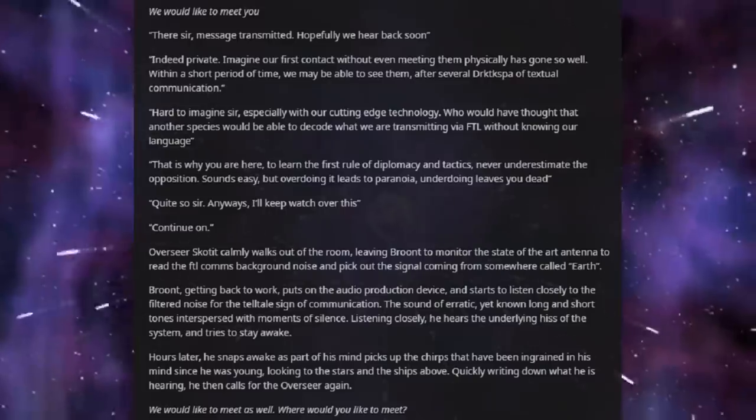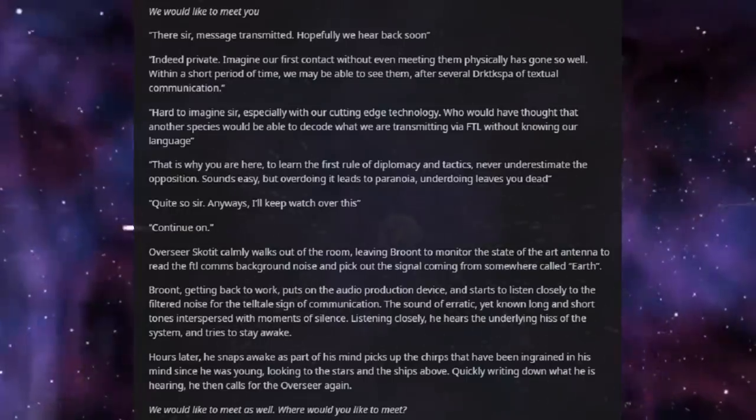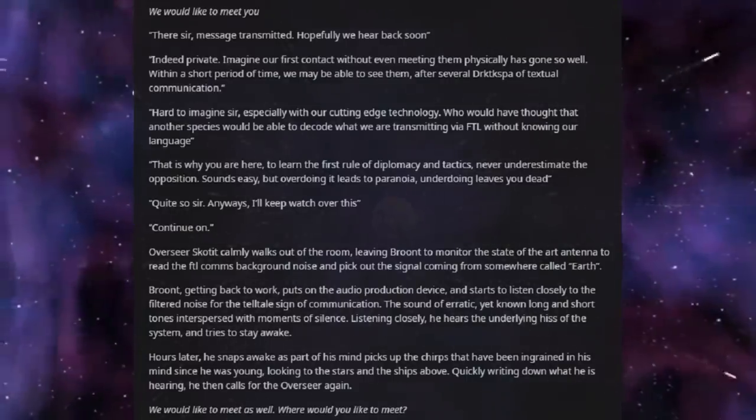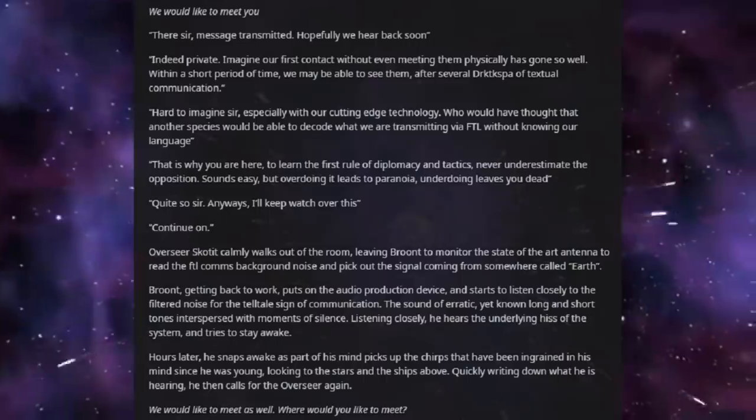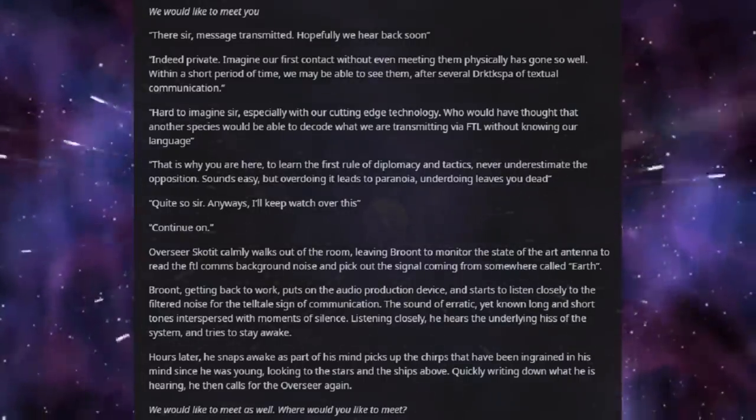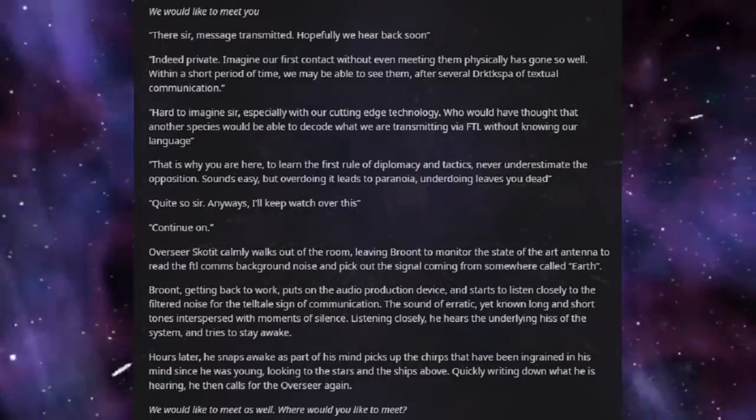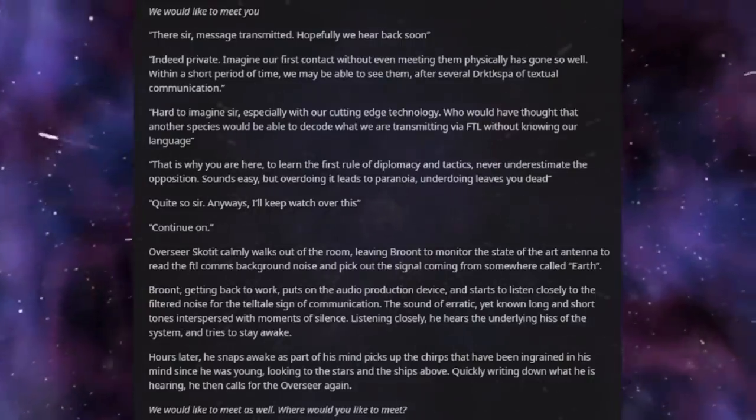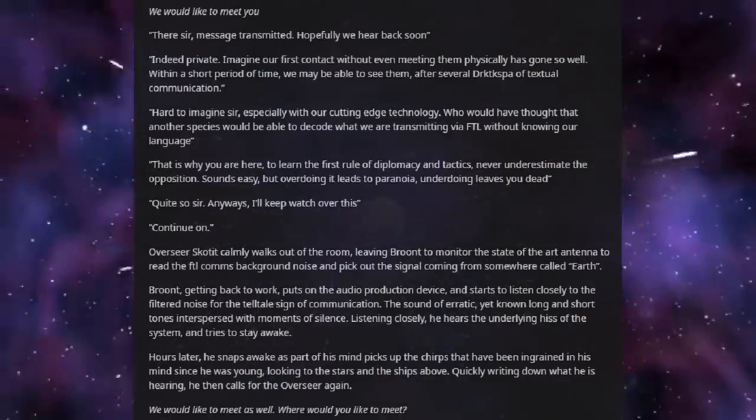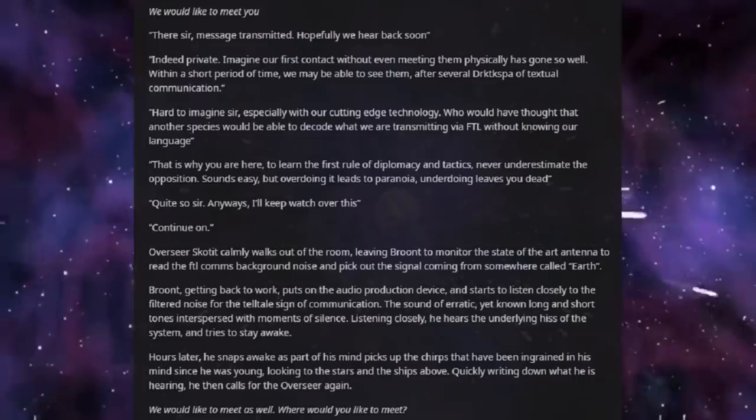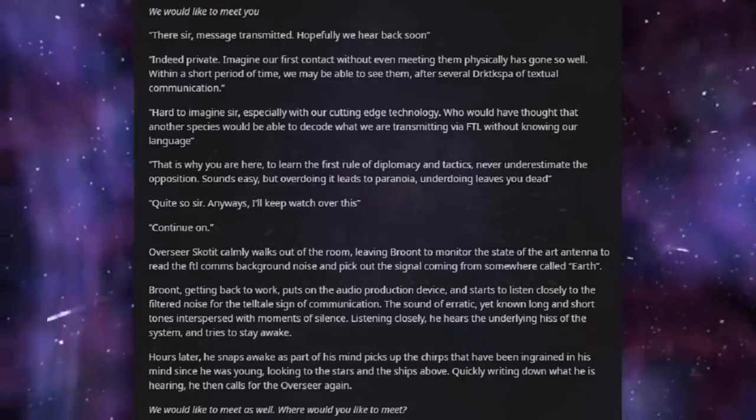Overseer Scottit calmly walks out of the room, leaving Brundt to monitor the state-of-the-art antenna, to read the FTL comms background noise and pick up the signal coming from somewhere called Earth. Brundt, getting back to work, puts on the audio production device and starts to listen closely to the filtered noise for the telltale sign of communication. The sound of erratic, yet unknown long and short tones, interspersed with moments of silence. Listening closely, he hears the underlying hiss of the system and tries to stay awake. Hours later, he snaps awake as part of his mind picks up the chirps that had been ingrained in his mind since he was young, looking to the stars and the ships above. Quickly writing down what he is hearing, he then calls to the overseer again.